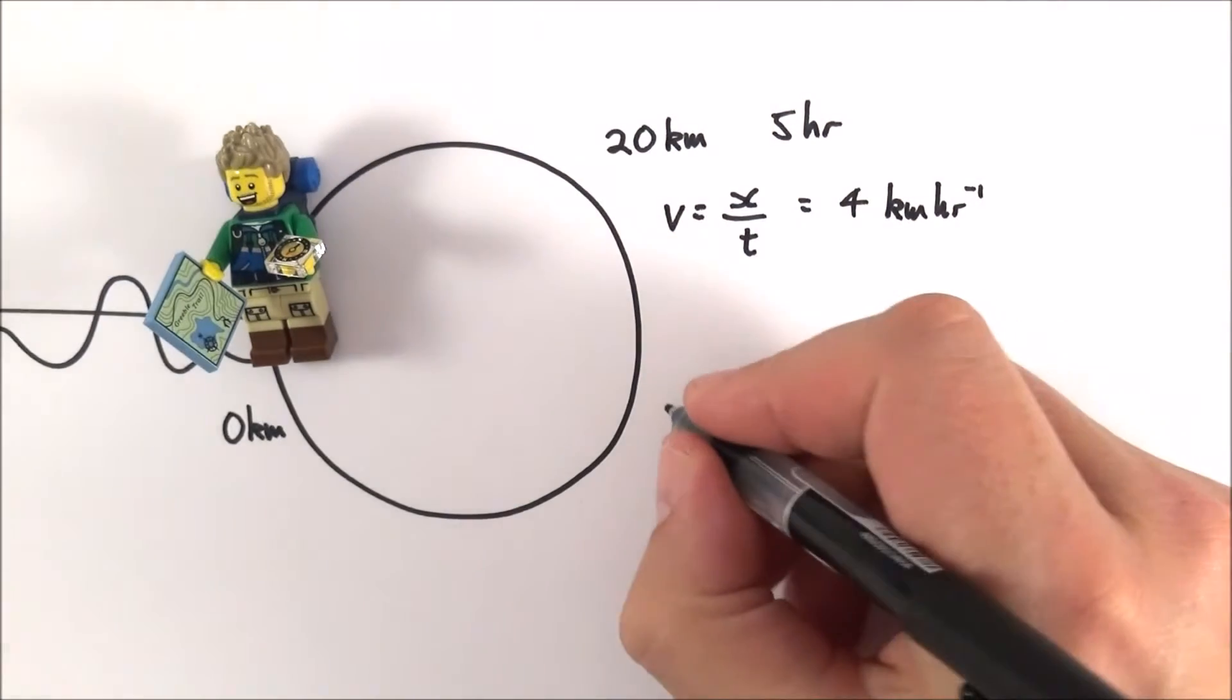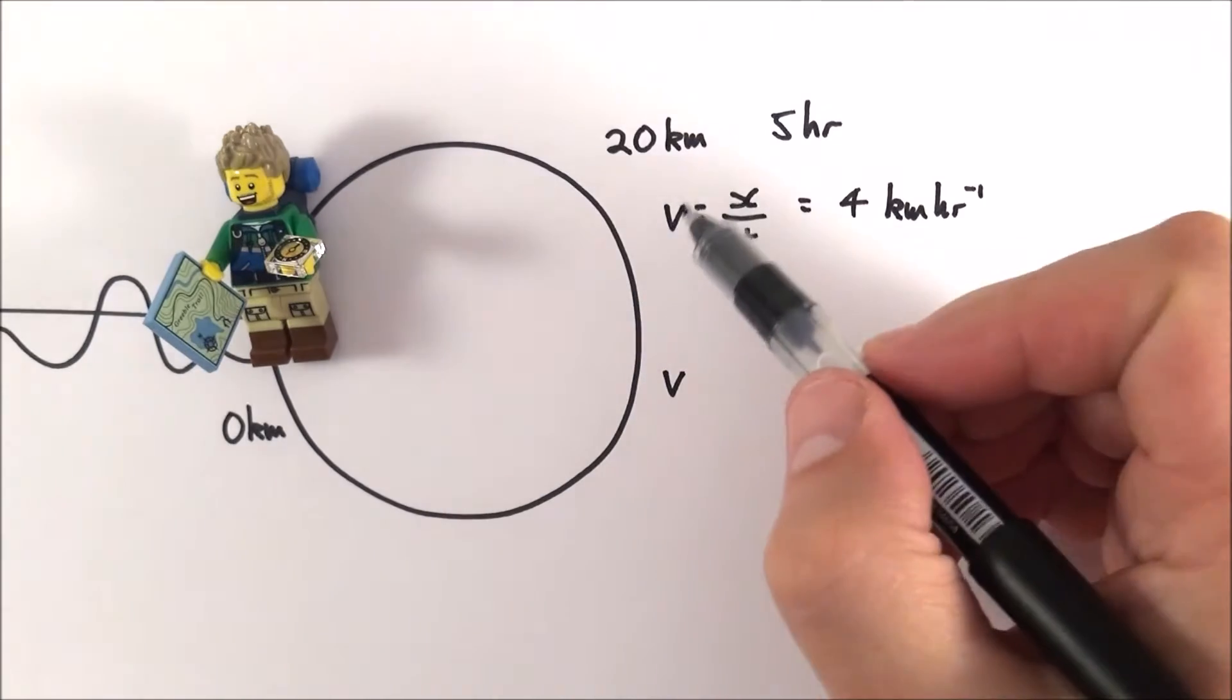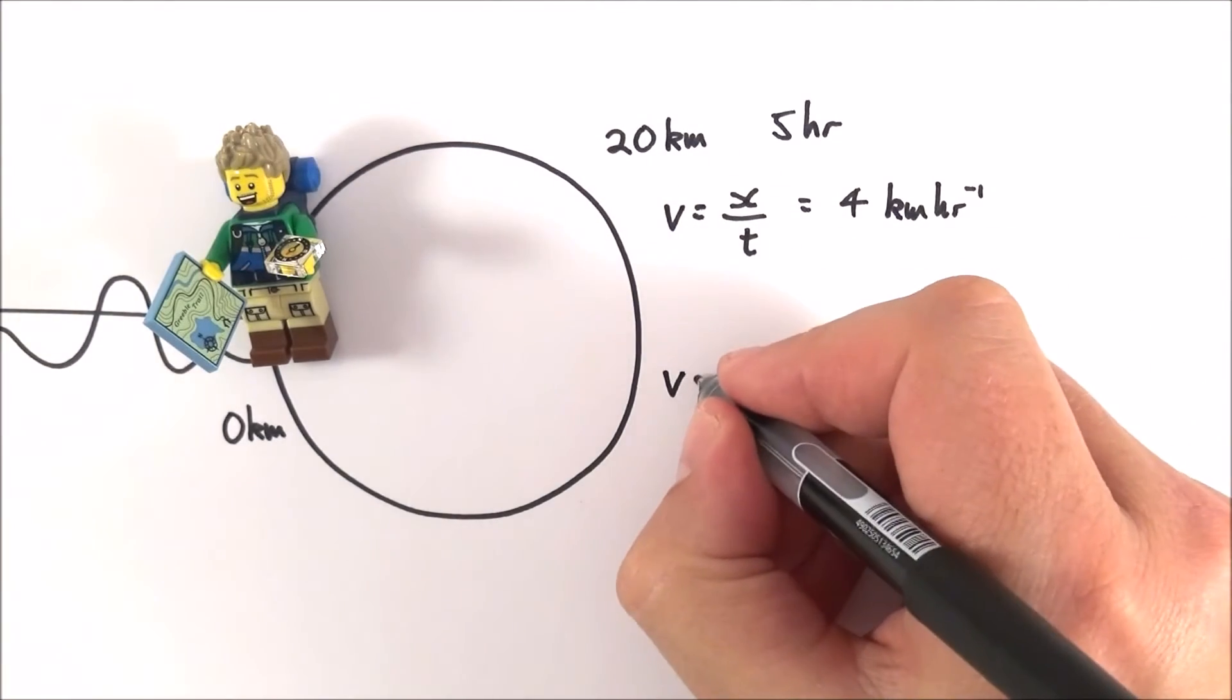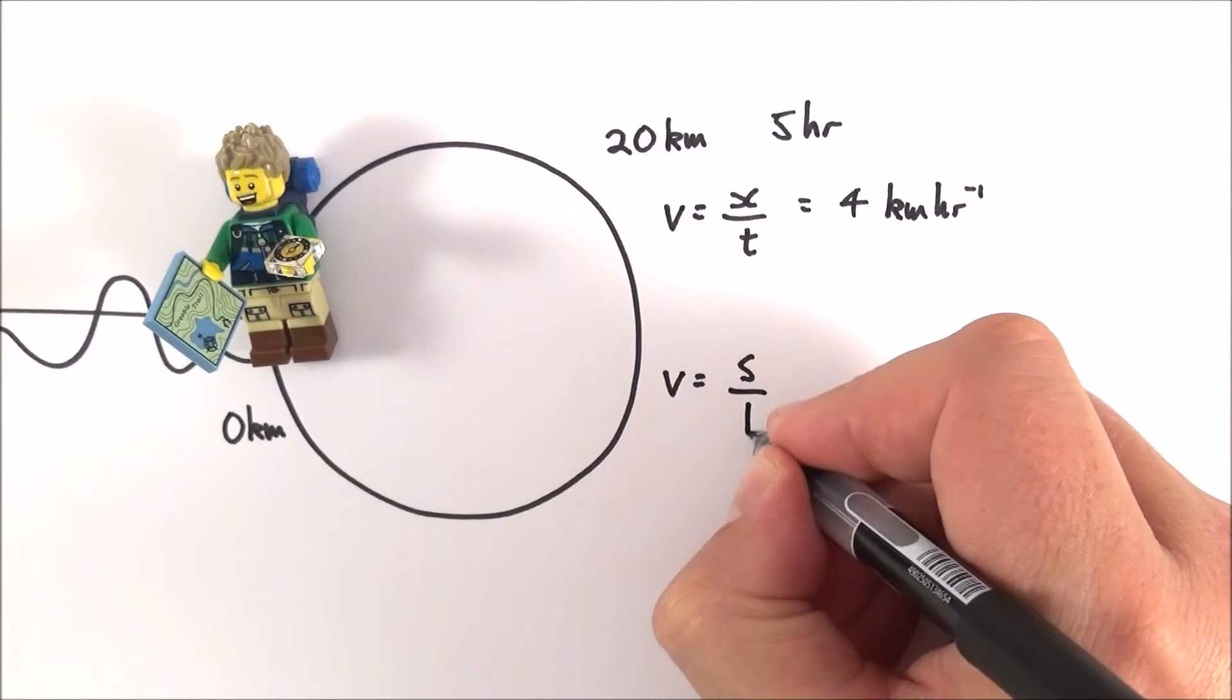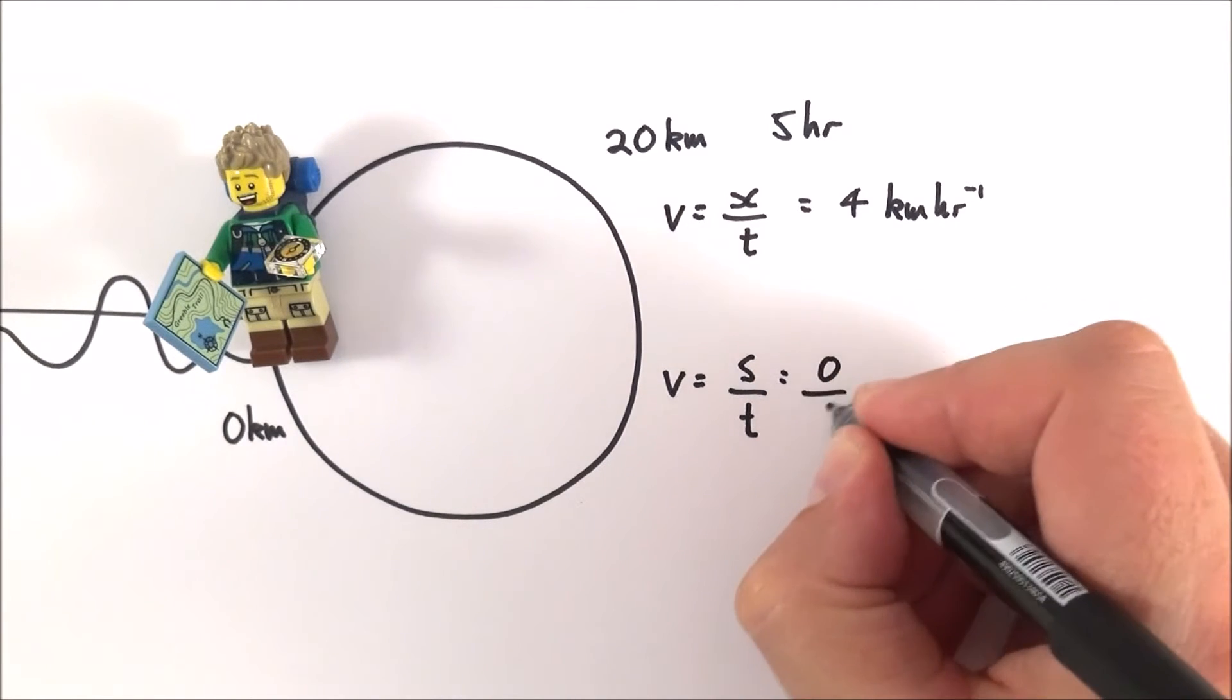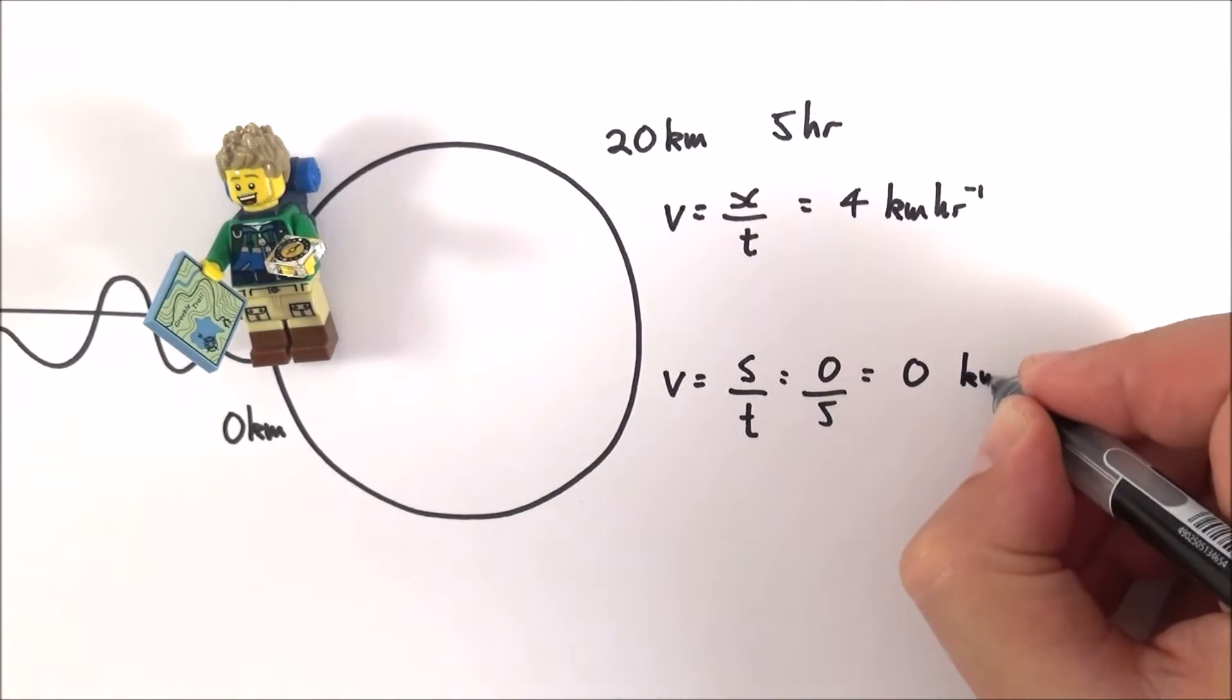If however we want to know their average velocity - and just be aware that we use v for speed and v for velocity - their velocity is going to be equal to their total displacement over their total time which is zero over five hours which is just zero kilometers per hour.